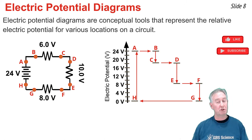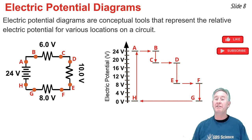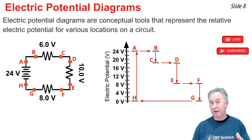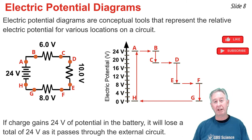When charge passes from B to C through a resistor, there's a voltage drop of 6 volts, lowering the electric potential from 24 volts at B to 18 volts at position C. Location D is on the same wire as C, so it also has 18 volts. As charge passes from D to E through the next resistor, a 10-volt drop lowers the voltage to 8 volts at E. From F to G, the last resistor drops the voltage by 8 volts down to 0 volts — the negative terminal of the battery. This illustrates why charge gains 24 volts in the battery but must lose a total of 24 volts through the external circuit.